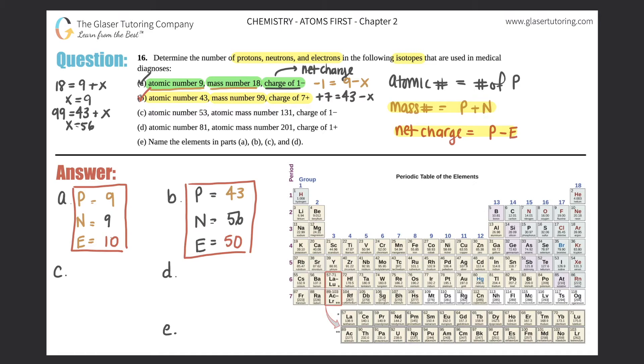C. I'm going to list protons, neutrons, electrons. For C, they say atomic number is 53, so we know that we have 53 protons. Atomic mass number - they're switching up the words here, but atomic mass number is the same thing as mass number, and that always is still protons plus neutrons. So if you have 131 equals 53 plus X, 131 minus 53 would get you 78, and that's how many neutrons you have.